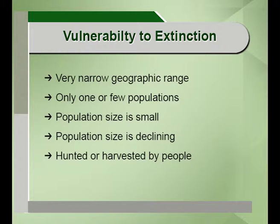I want to describe the categories of species which are vulnerable to extinction — which are more prone to extinction. Number one: species with a very narrow geographical range. Species restricted to a particular geography cannot go beyond that geography and are more vulnerable to extinction. Because of geographical barriers, they are unable to cross and are in more danger if that particular habitat is destroyed or degraded. Then, species with only one or few populations are also more vulnerable.